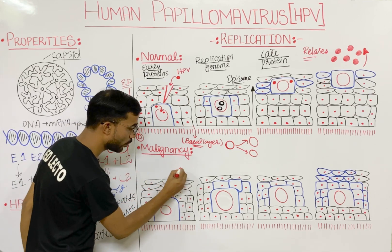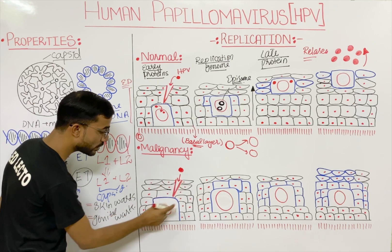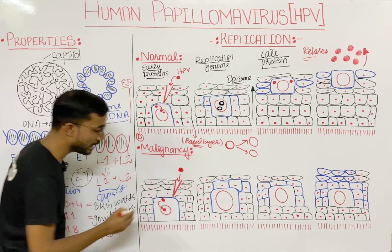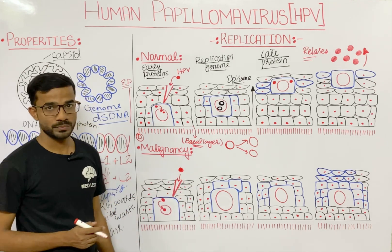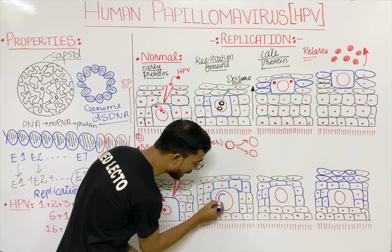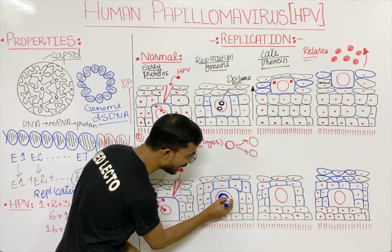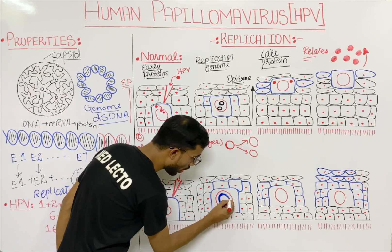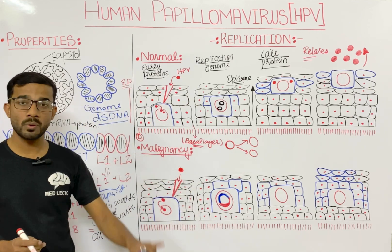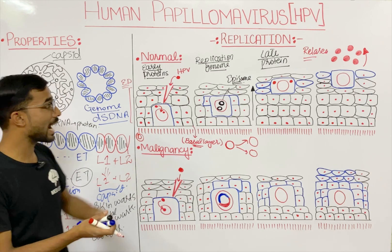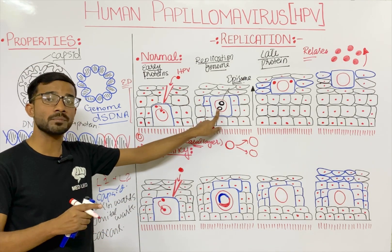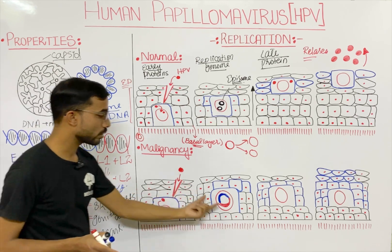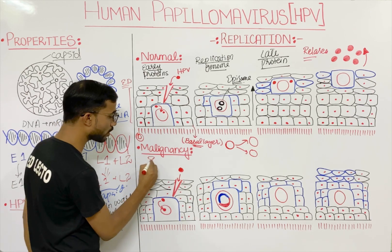In the malignancy pathway, the virus again enters through abrasion and reaches the basal surface of the squamous cell. The viral genome reaches into the nucleus. In this case, the viral DNA gets integrated with the host cell DNA of the squamous cell. This integration of the viral DNA with the host DNA is the key difference from normal replication.